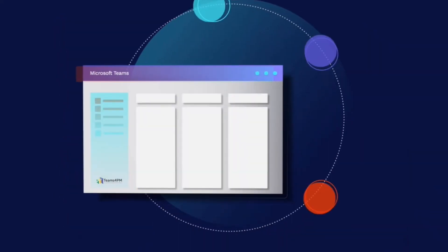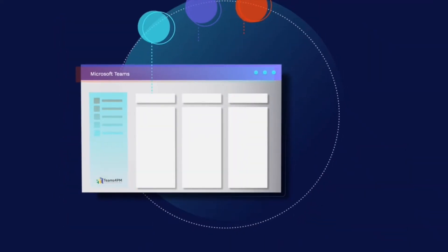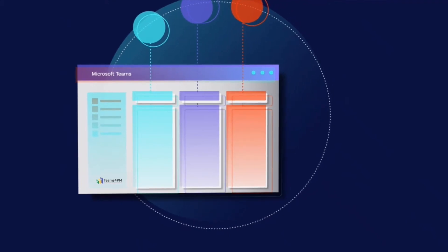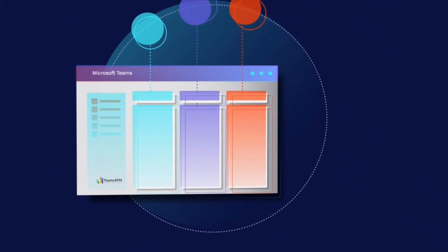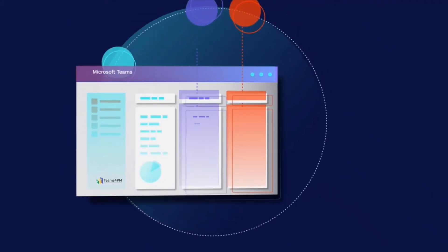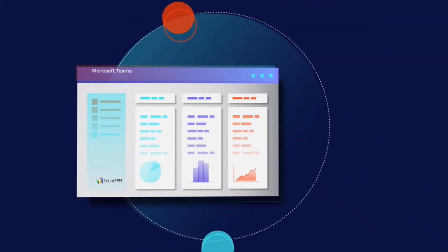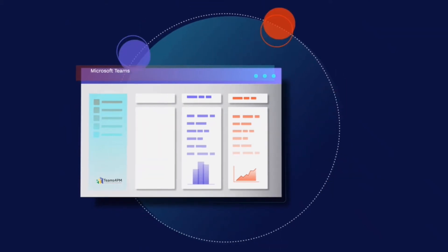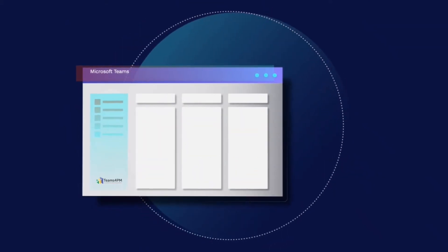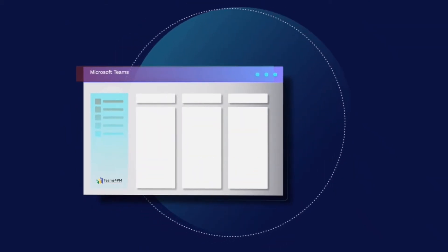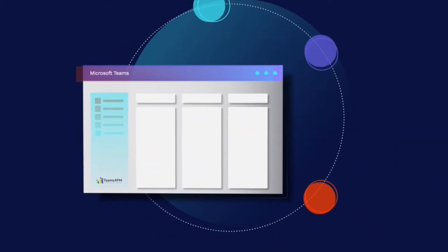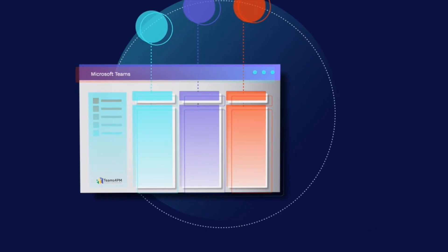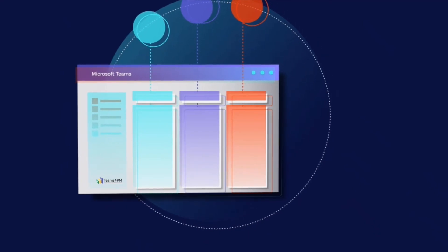Teams for PM allows you to use the project scheduling tools you want by enabling both Project Online and Project for the Web in Teams. Centralize all of your simple and enterprise projects into a common data source while using the right tools for the job.